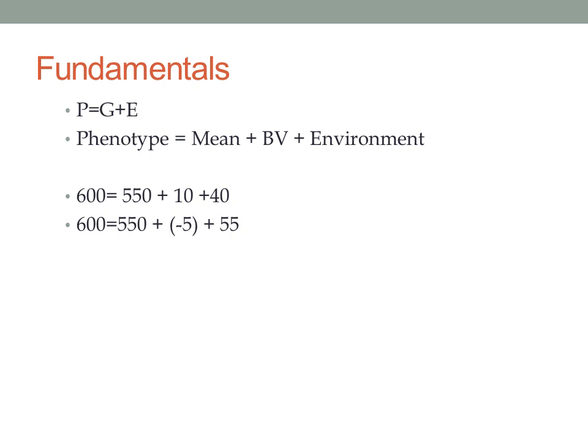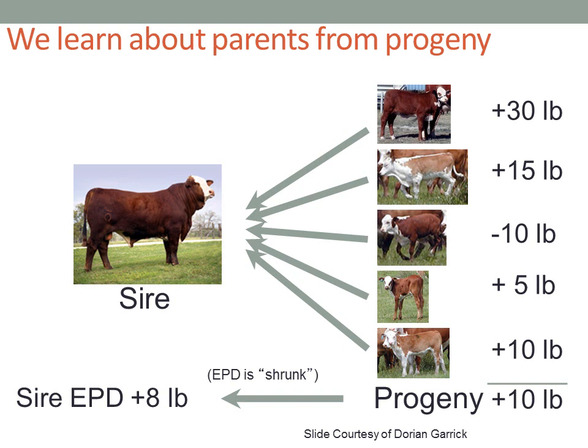As we choose sires, we have to realize the only advantage a sire passes on to the next generation is through his genetics, not through the environmental benefits he may have been afforded. So it's important to realize that selection on just an animal's phenotype can lead us in the wrong direction.